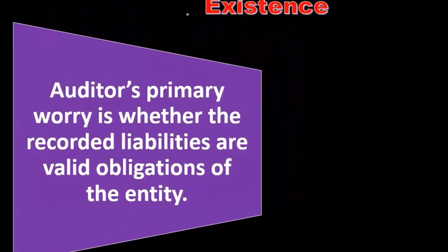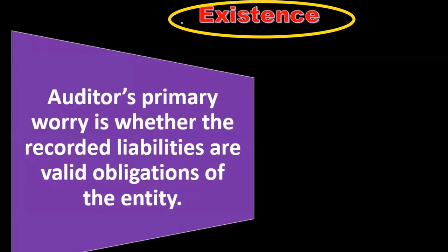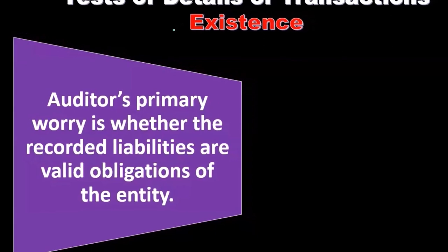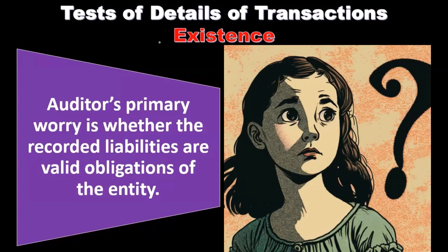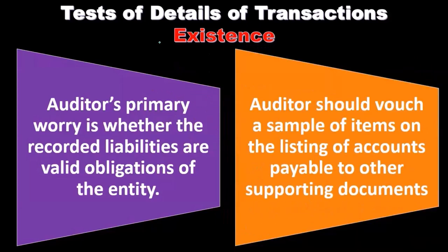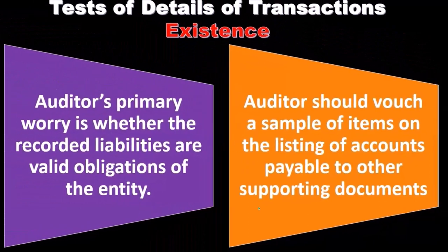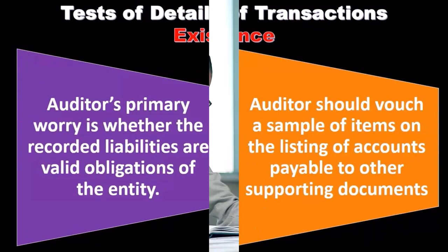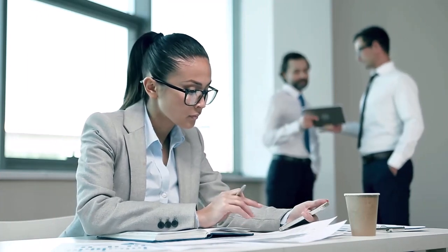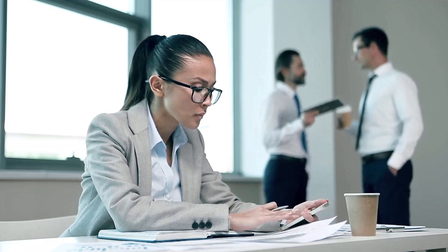You would think entities wouldn't overstate liabilities, but that is essentially what we are testing with the existence assertion. Intentionally overstating liabilities would make the entity look worse, which is uncommon unless there are tax-related reasons. Auditors should vouch a sample of items on the listing of accounts payable to the supporting documentation — taking the end result and tracing back to source documentation to verify that what is on the books actually happened.